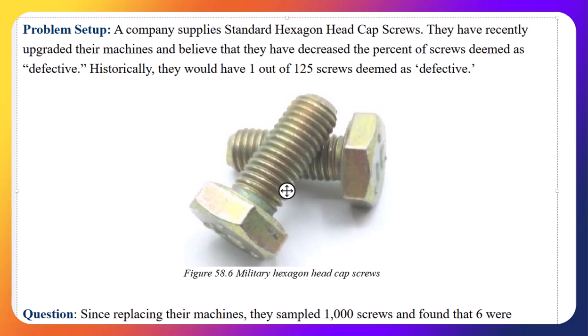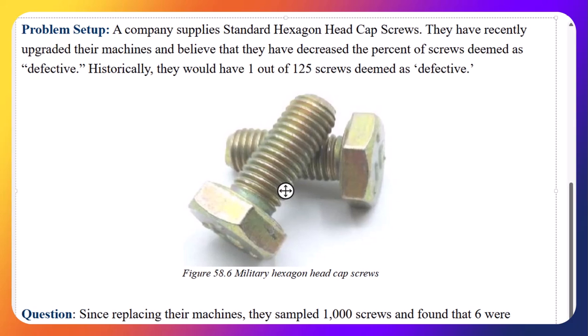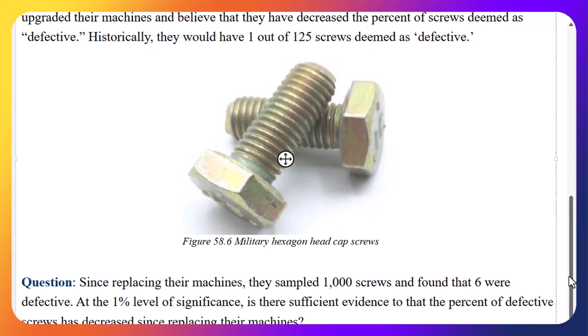And now, the question to answer is the following. So let's say, after replacing their machines, they sampled 1,000 screws and found that 6 were defective. At the 1% level of significance, is there sufficient evidence to find that the percent of defective screws has decreased since replacing their machines? Was it worth it? Did we actually decrease the number of defective screws? So let's go have a look. We're going to use a hypothesis test to answer this question.